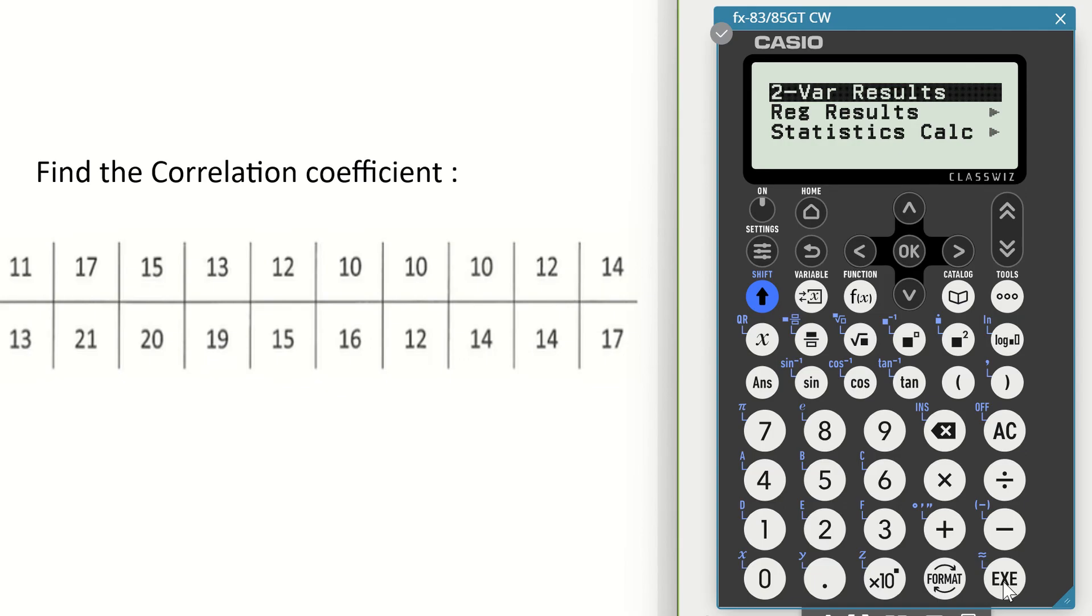I want to retrieve my correlation coefficient, so I scroll down here to REG results, right click, and I click on y equals a plus bx, the equation of the line basically. Click OK.